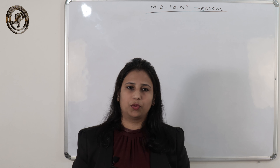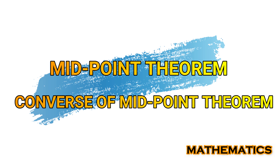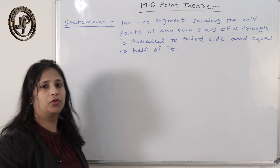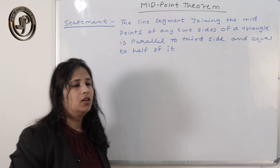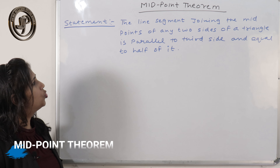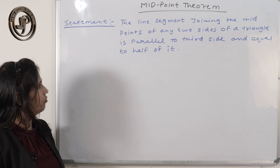Let's start the midpoint theorem. The statement of the theorem is: the line segment joining the midpoints of any two sides of a triangle is parallel to the third side and equal to half of it.